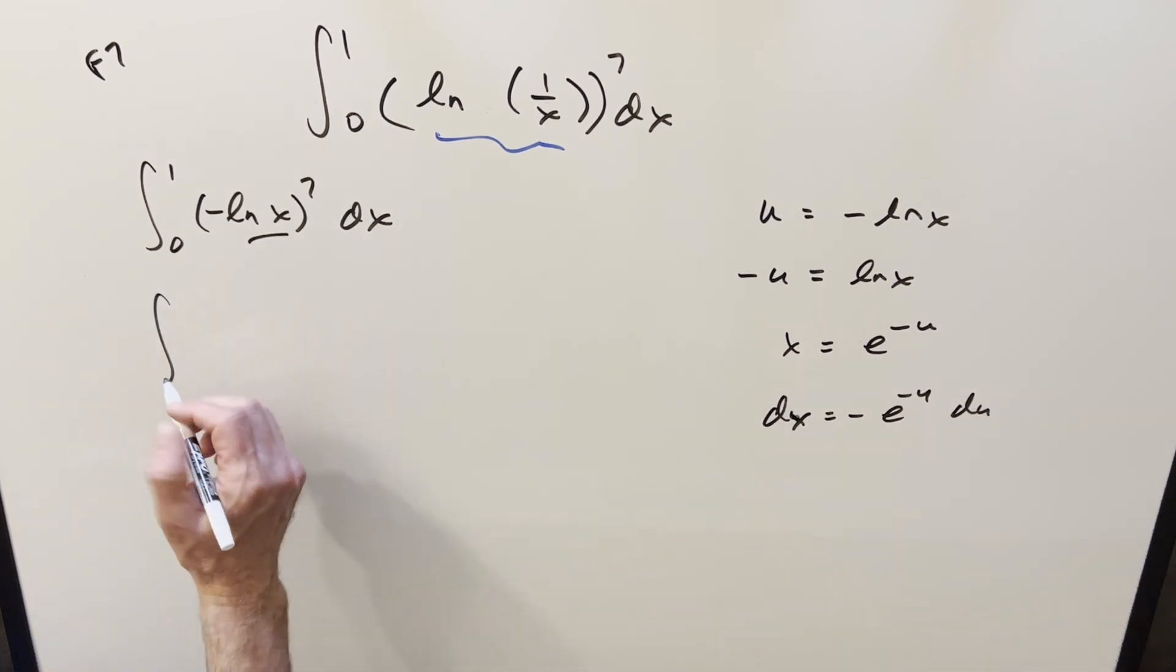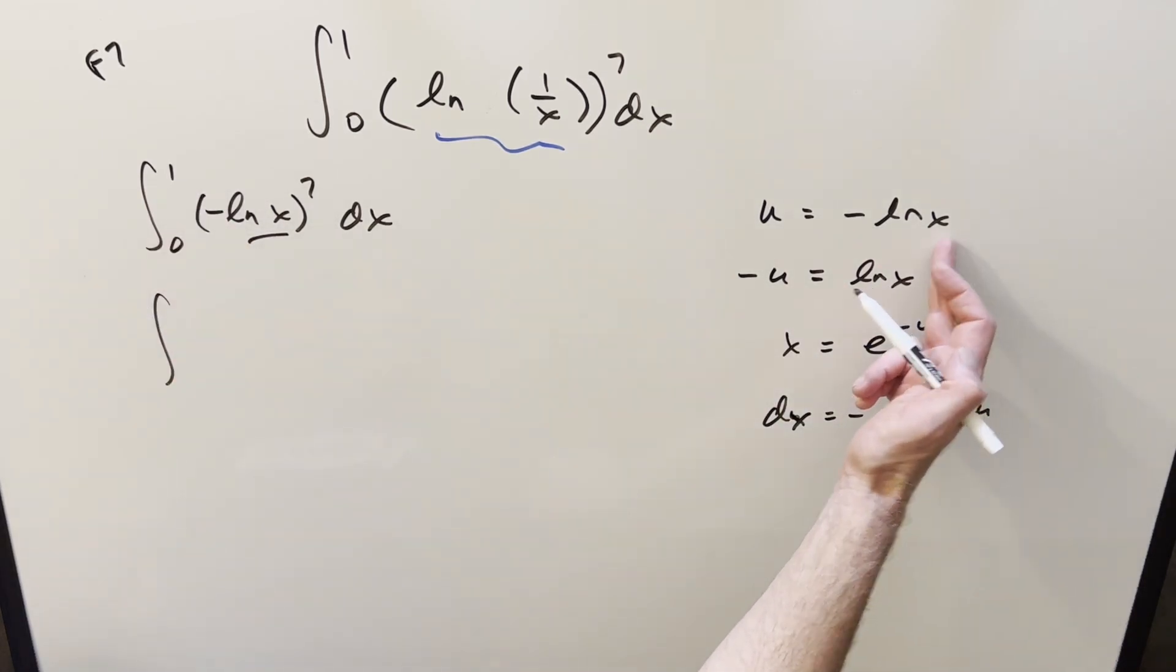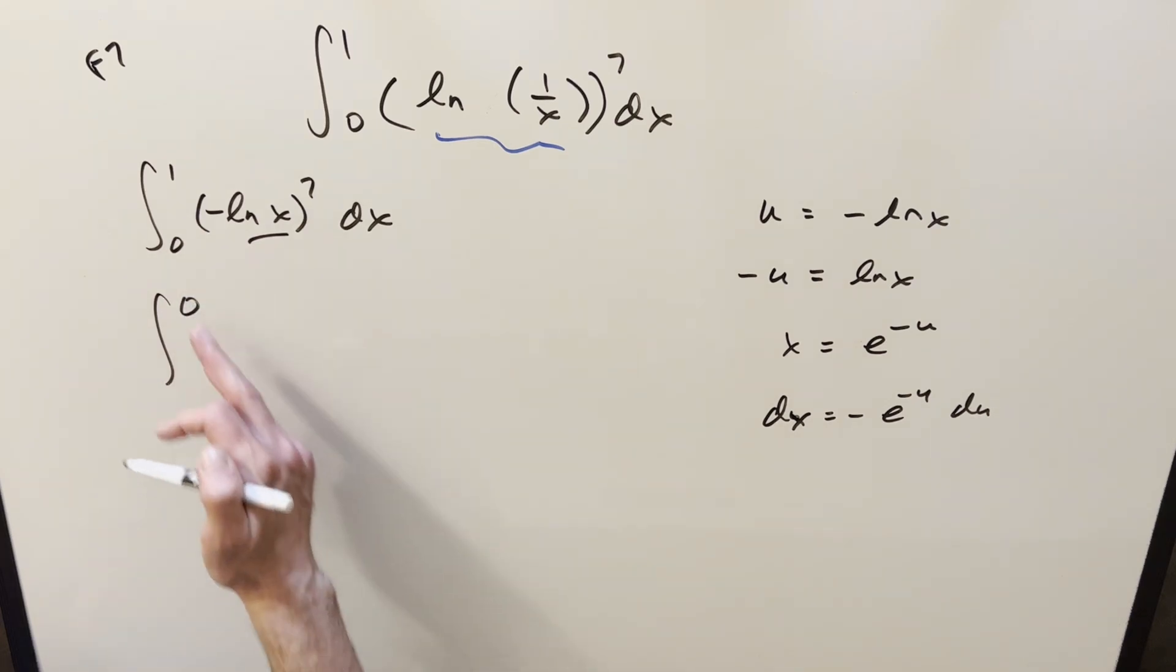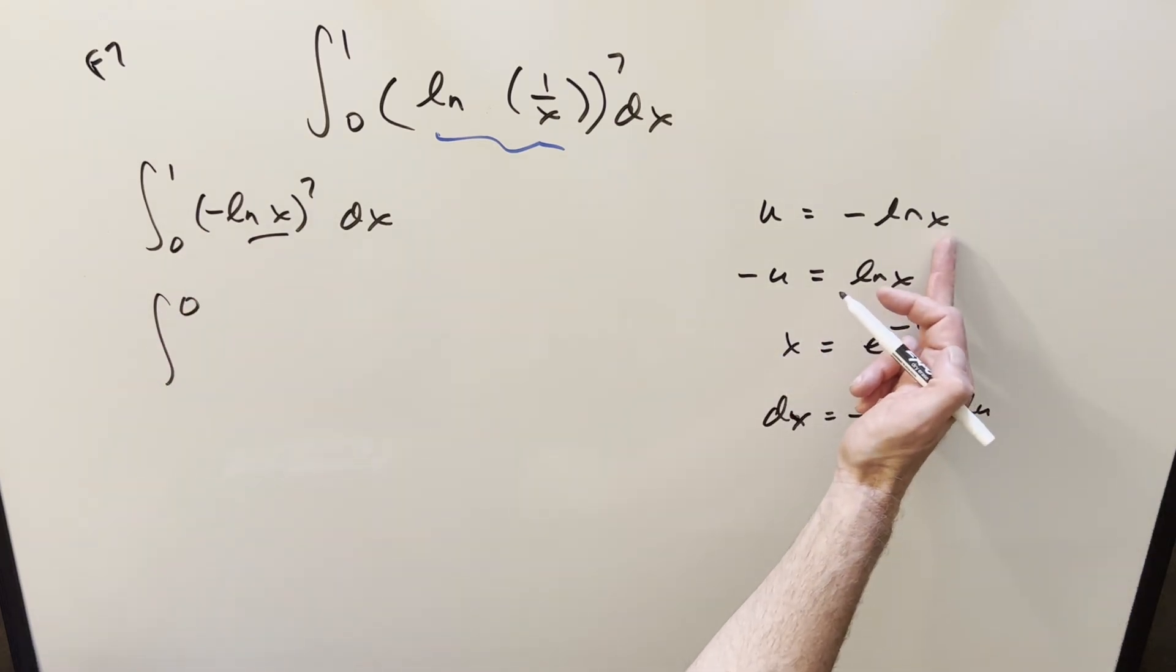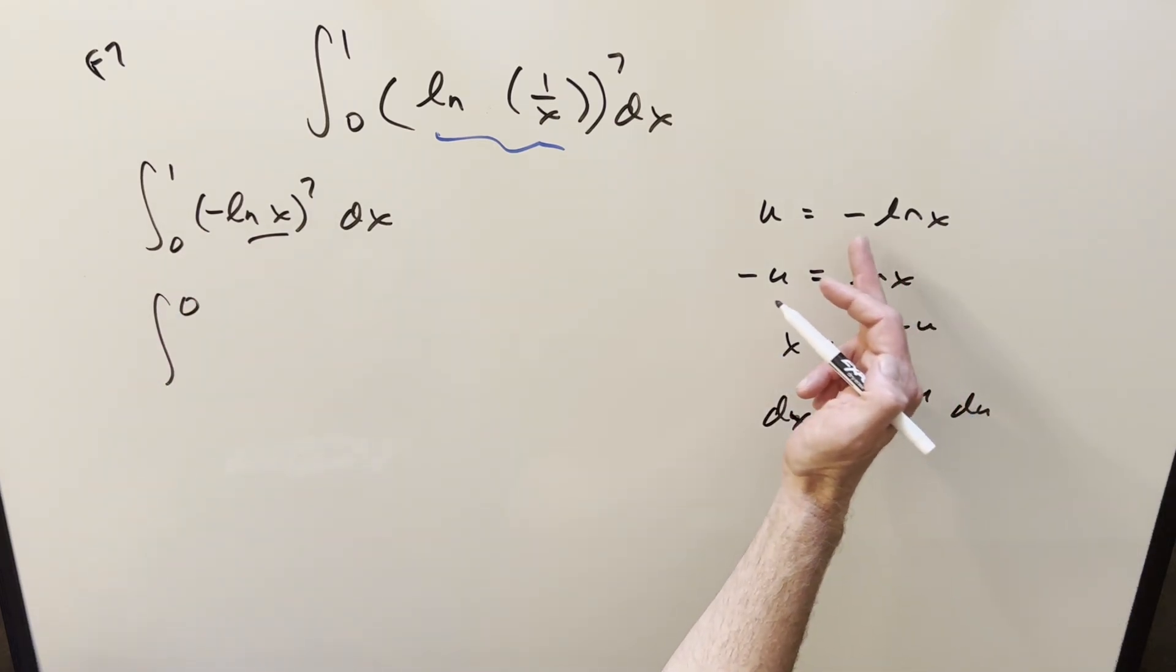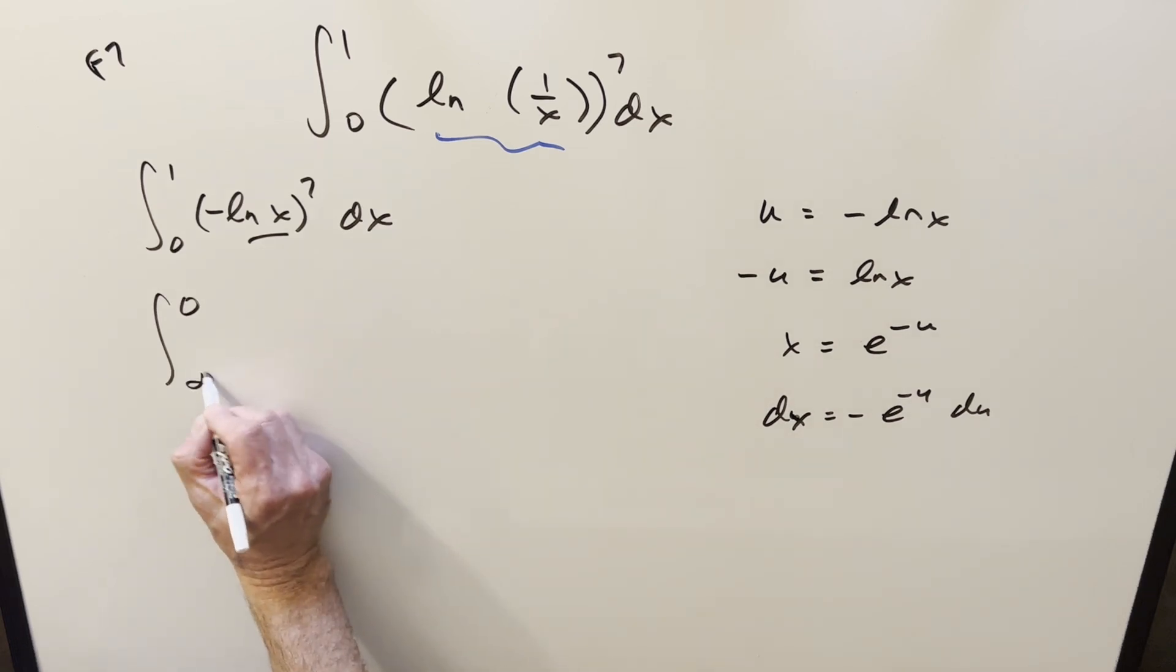So then I'll go ahead and substitute. First, you plug a 1 in here. That's just going to be 0 for our u value. You plug in 0. That's going to be minus infinity times minus. That's going to be positive infinity.